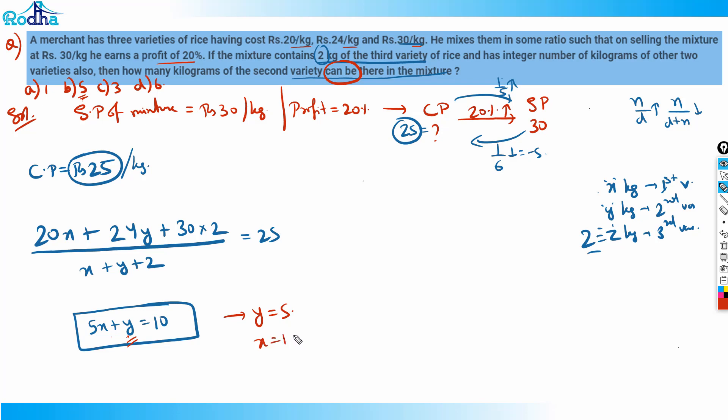Even if the question had not given options, x equals 1 and y equals 5. X equals 2 is not possible, y equals 0 because there is some variant of all varieties. Even without options, y equals 5 and x equals 1 would be the answer. That's the question, I think all of you got this.